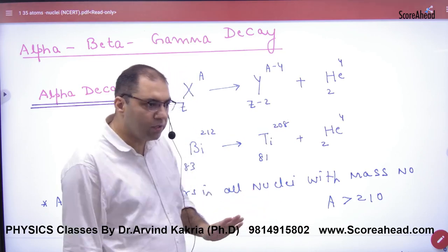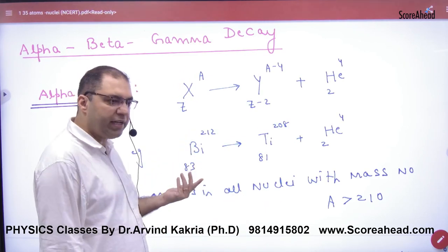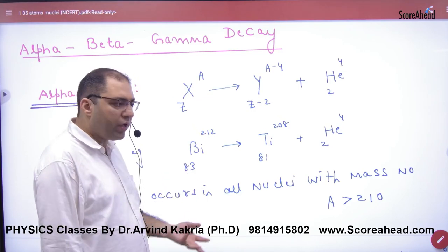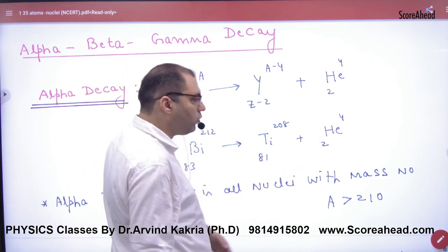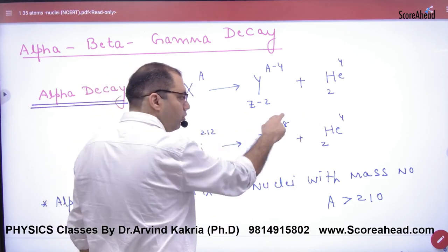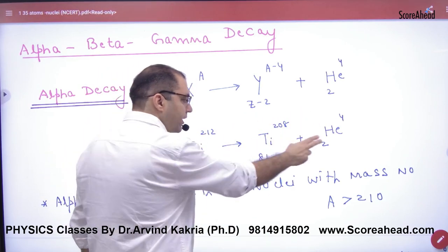Let's assume that there is an element of atomic mass number 212 and 83. So a new element will become plus alpha particle, helium 4,2. It means 212 minus 4, and this will become 83 minus 2.